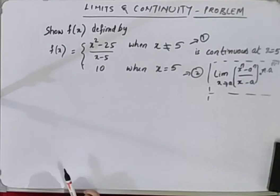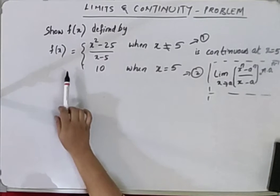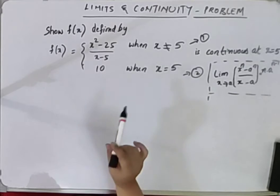Let's solve a limits and continuity problem where we have to show that f of x is continuous at x equals 5. We have to prove that.